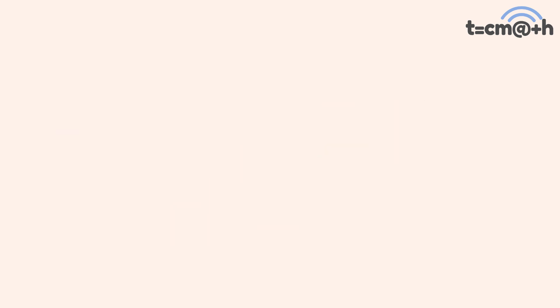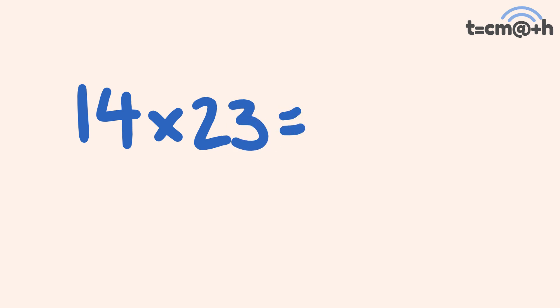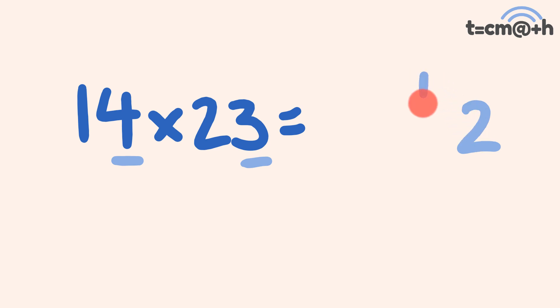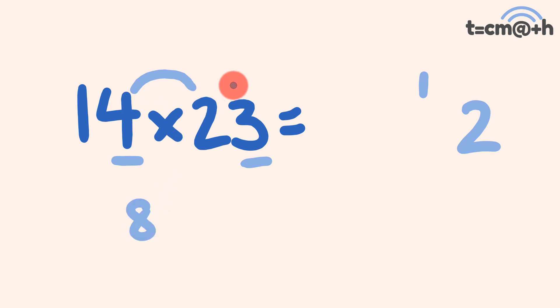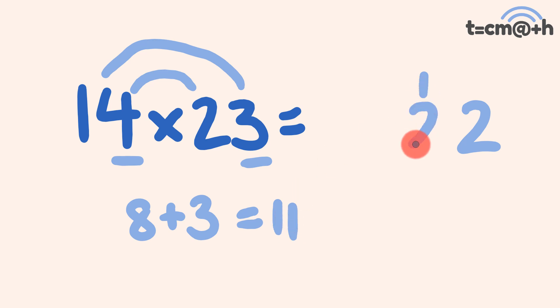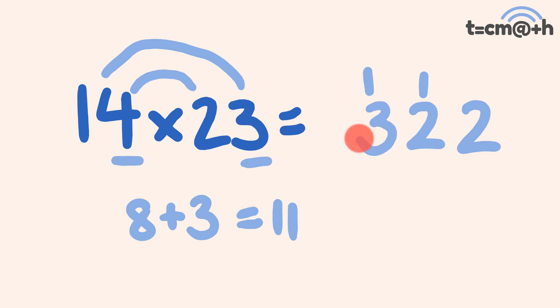What about 14 times 23? Units part: 4 times 3 is equal to 12 — put the 2 down and carry the 1. Rainbow part: 4 times 2 equals 8, plus 1 times 3 equals 3; 8 plus 3 is 11, plus the carried 1 is 12 — put the 2 down and carry the 1. Finally, 1 times 2 equals 2, plus the carried 1. Our answer is 322.